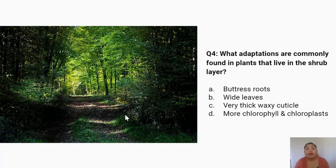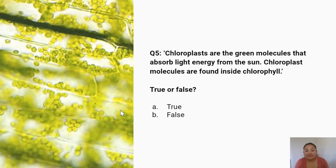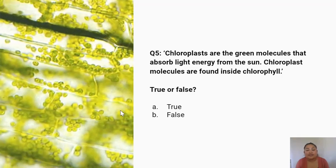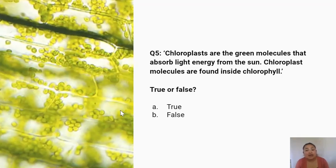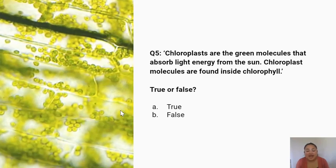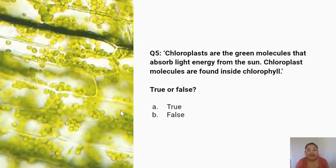Question four: what adaptations are commonly found in plants that live in the shrub layer? A. Buttress roots. B. Wide leaves. C. Very thick waxy cuticle. D. More chlorophyll and chloroplasts. Question five: chloroplasts are green molecules that absorb light energy from the sun, and chloroplast molecules are also found inside chlorophyll. True or false? A. True. B. False.